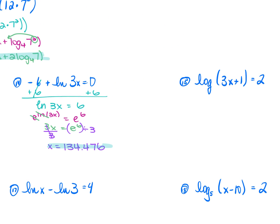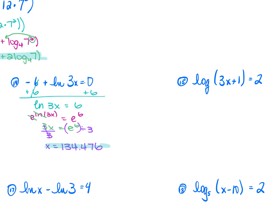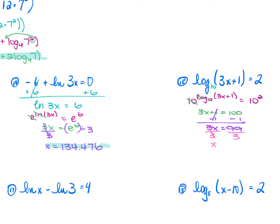For number 15: log(3x + 1) = 2. Since there's no stated base, it's automatically base 10. Raise 10 to both sides: 10^(log(3x+1)) = 10². The 10 and log₁₀ cancel, leaving 3x + 1 = 100. Subtract 1: 3x = 99. Divide by 3: x = 33.